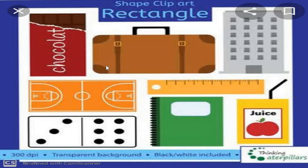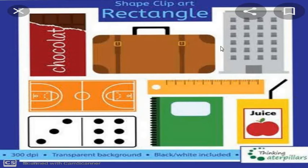Now look at the screen. Have you seen all these objects in your real life? This is a suitcase, a building, a ruler, a geo-scan, your diary. What is the similarity in all these objects? They all are in rectangle shape. The spelling of rectangle is R-E-C-T-A-N-G-L-E. You have to memorize all the spellings of shapes.